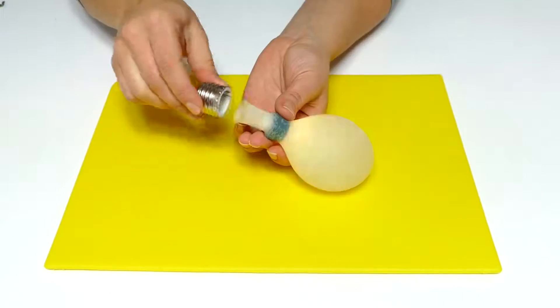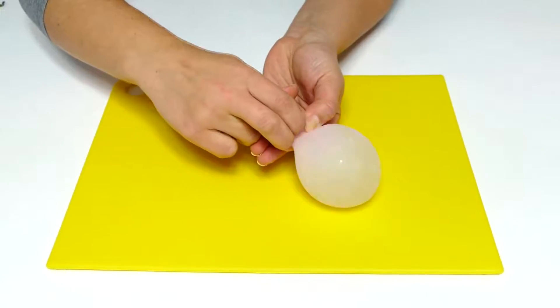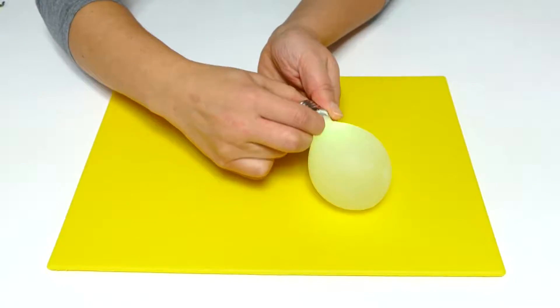Now we just need to put the bulb's cap. I prepared it beforehand. Just cut it out from a non-working energy saving light bulb.